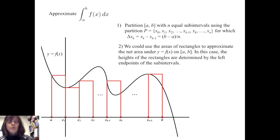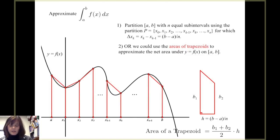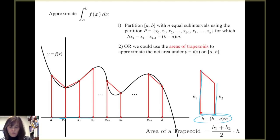We could use the areas of rectangles to approximate the net area under y equals f of x on the closed interval from a to b, where the heights of the rectangles are determined by the left endpoints of the subintervals. Alternatively, we could use the areas of trapezoids. Recall that the area of a trapezoid is the average of the bases, (b1 plus b2) over 2, times the height. In this case, a sample trapezoid has two parallel bases b1 and b2, and the height occurs along the x-axis, with each height equal to b minus a over n.